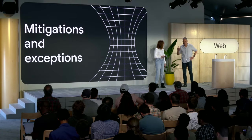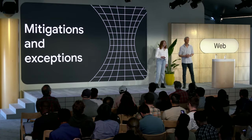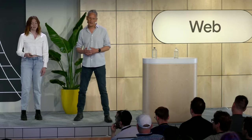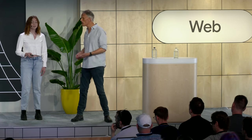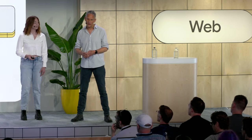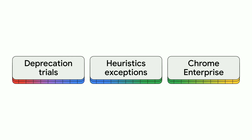Cross-site cookies have been a critical part of the web for over a quarter of a century, and that makes any change — especially breaking changes — a complex process that needs a coordinated, incremental approach. As with many previous deprecations on the web, we understand there are cases where sites will need extra time to make the necessary changes and preserve critical user experiences. There are three ways Chrome is temporarily allowing sites to continue using third-party cookies to give you time to adapt: deprecation trials, heuristics-based exceptions, and Chrome Enterprise policies.